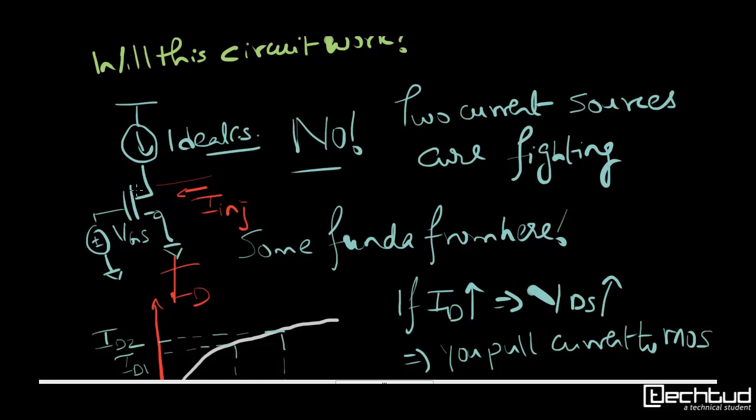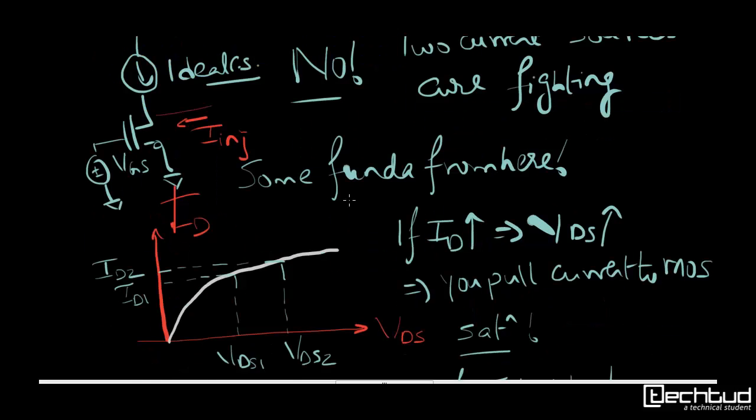Here we are putting one current source above the MOS transistor. What you will see, since it's an ideal current source and the MOS also behaves like a current source based on VGS, this will be two current sources fighting.